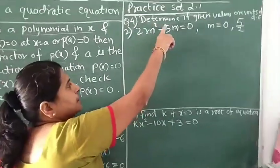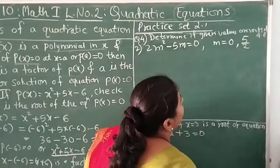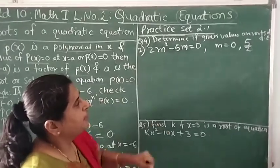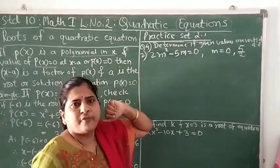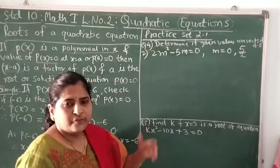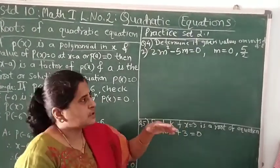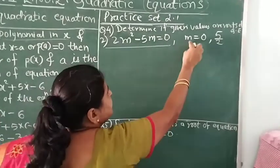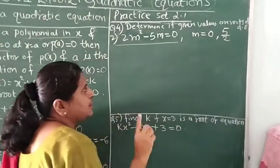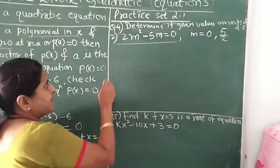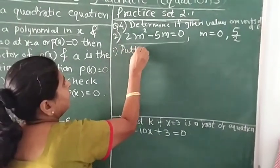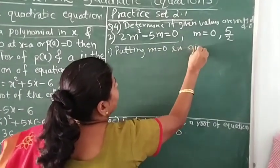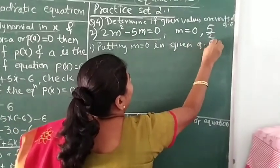I have selected the second example because values given are 0 and a fraction — m = 0 and m = 5/2. Many students go wrong with such values, whether they are negative, zero, or fractions. So let's check: the quadratic equation is 2m² − 5m = 0, and we check whether m = 0 and m = 5/2 are roots.